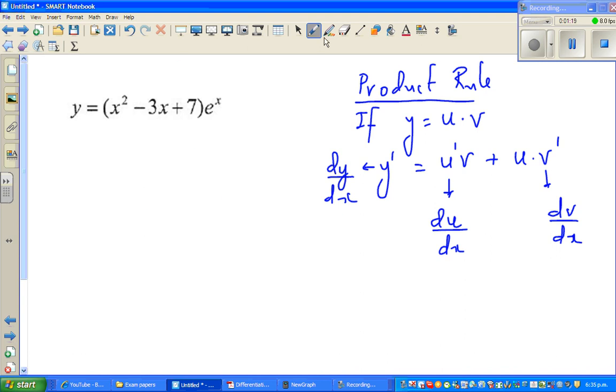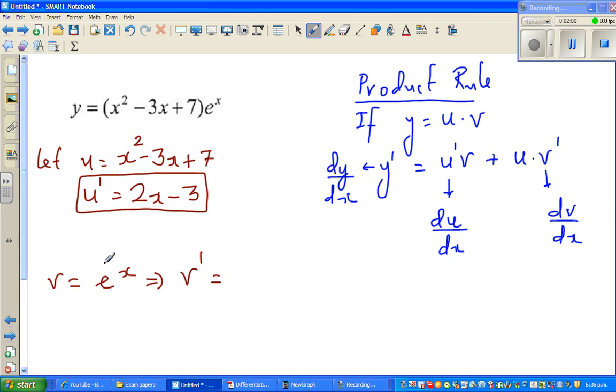Let's use this rule. Let u equal this first function, which is x squared minus 3x plus 7. And v is equal to e to the power x. Now differentiating u, u dash is 2x minus 3. And v dash, the differentiation of e to the power x, is e to the power x.